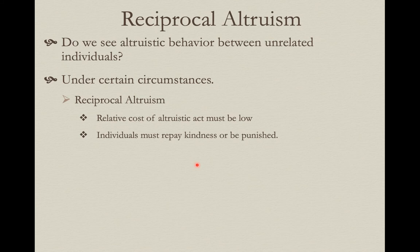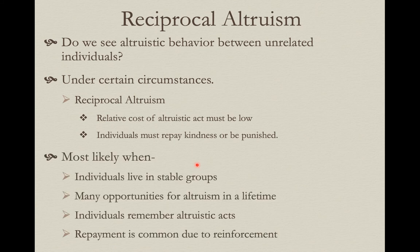Because whatever this altruistic act is, it is reciprocated — that's why it's called reciprocal altruism. Individuals that receive the benefits of an altruistic act must repay it in kind in the future, or there has to be some type of punishment. For reciprocity to work: individuals must live in stable groups, there must be potential for reciprocity with many opportunities over a lifetime, and individuals must remember who gave them an altruistic act and who owes them one. Repayment has to be common enough, or there must be some reinforcement so individuals do repay.